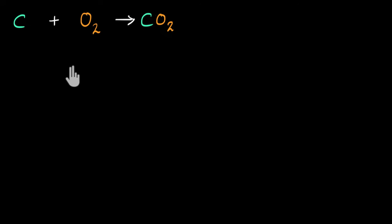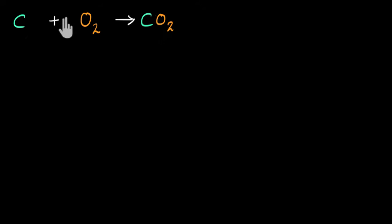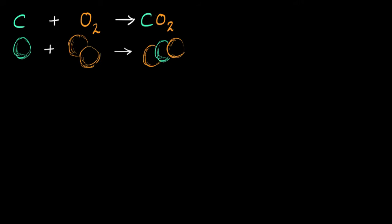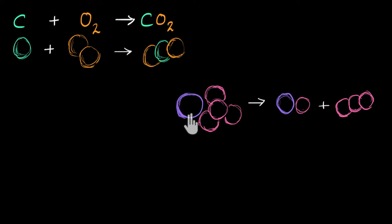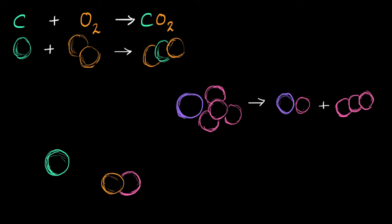In every chemical reaction, it's the atoms and molecules of the reactants that are getting rearranged to give us new products. And this rearrangement could happen in many ways: atoms and molecules could combine to give one single product, a big molecule could break down into smaller molecules, or there could be an exchange of atoms between reactants to give new products. So depending on the ways of rearrangement, we can classify chemical reactions into various types.